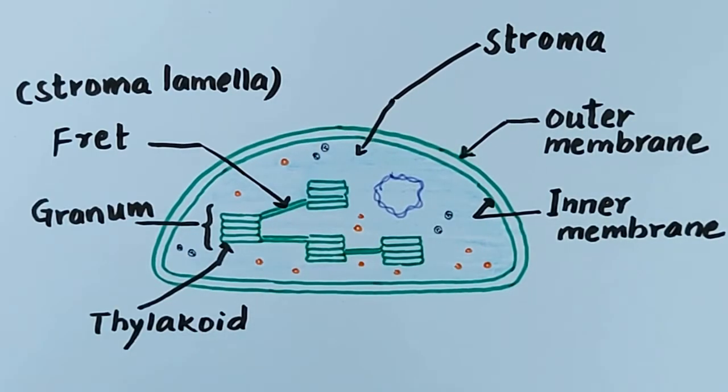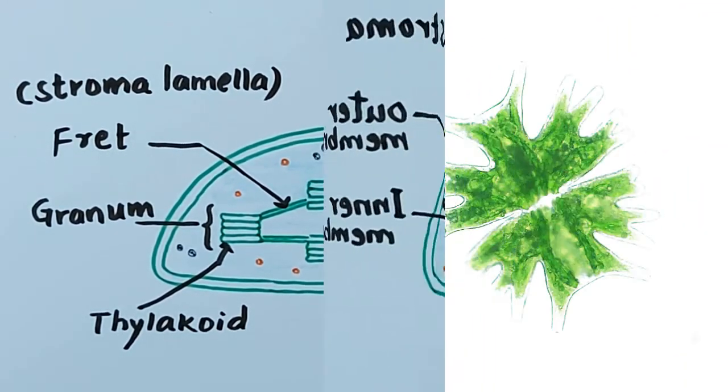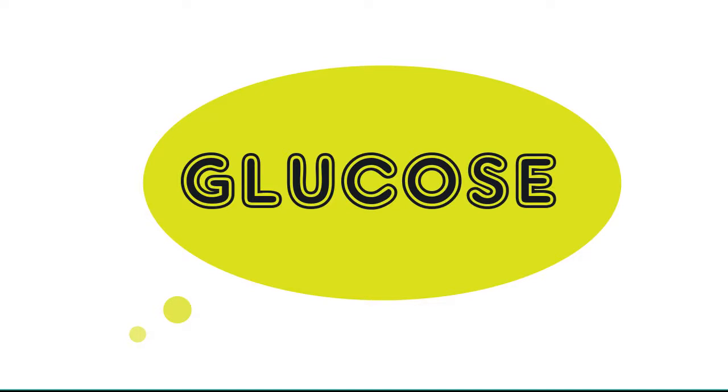Chloroplasts are double membrane-bound, spherical or oval-shaped cell organelles present in the cytoplasm of plant cells. They are also found in some other organisms like green algae. They help produce sugar, i.e., glucose, by photosynthesis.